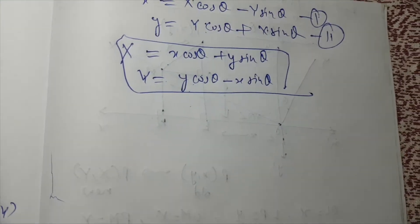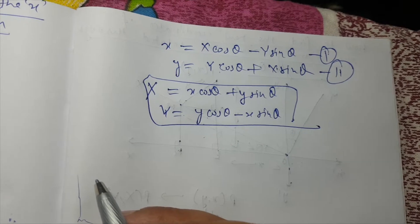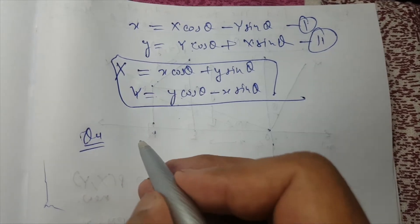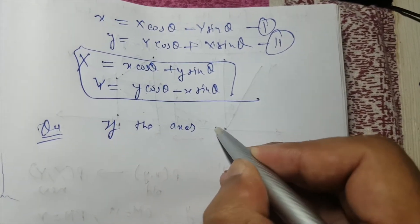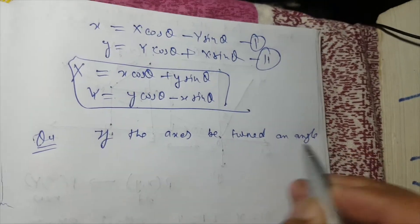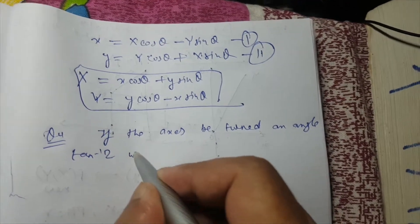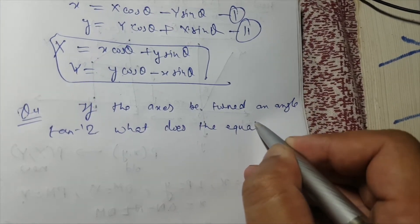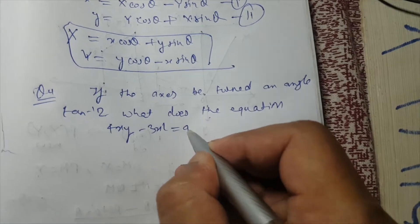Let me give you a question based on this so you can get the gist of how to solve any problem. The problem is: if the axes are turned through an angle tan⁻¹(2), what does the equation 4xy − 3x² = a² become?